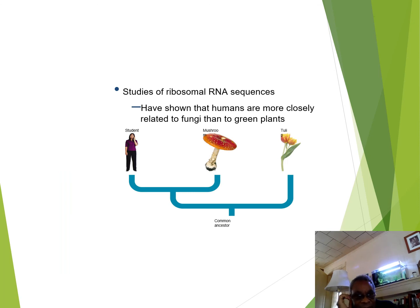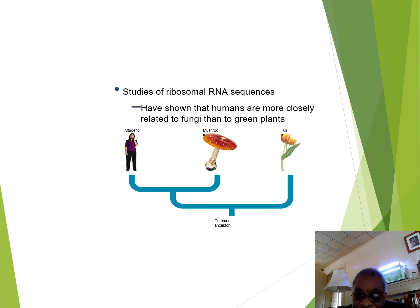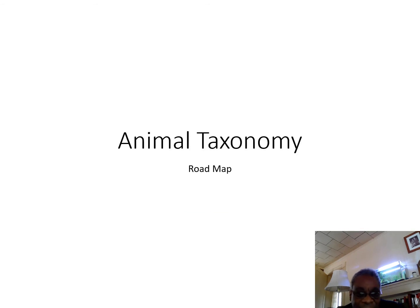Studies of ribosomal RNA sequences — another way of using the molecular clock to discern relationships — can show us that the mushroom in our refrigerator is much more closely related to us than we are to green plants.